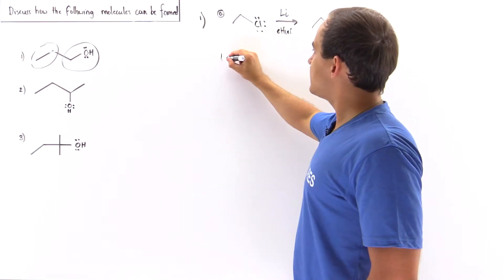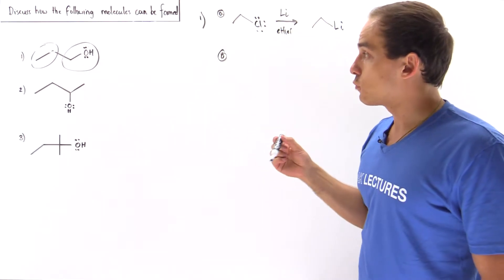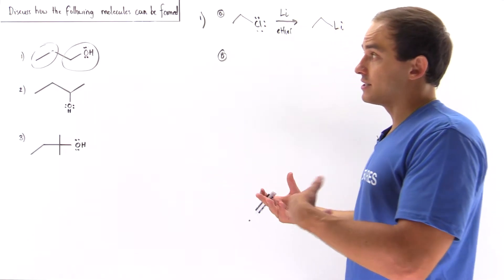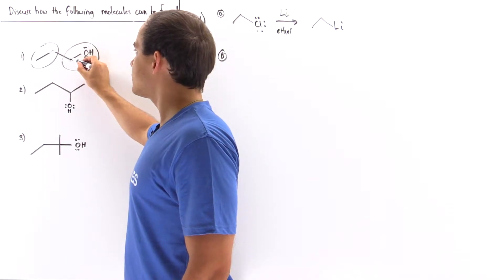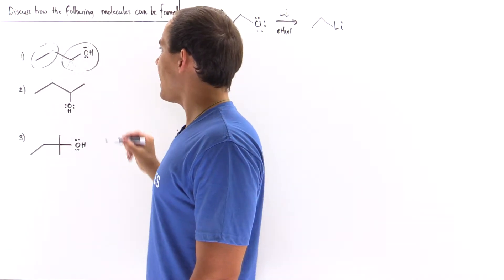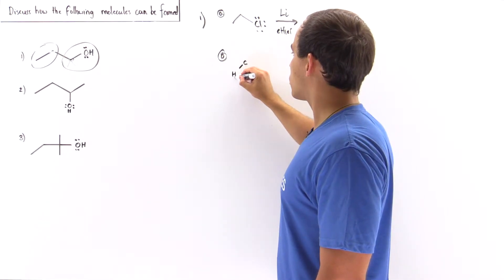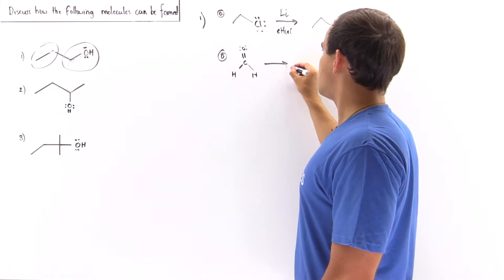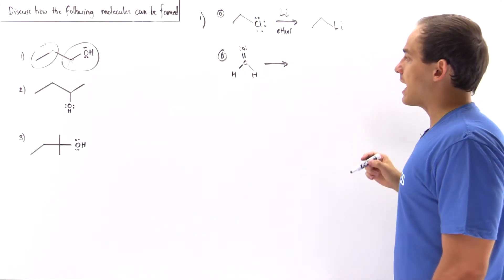In the second step we take our formaldehyde — not an aldehyde, but formaldehyde. The way we tell whether it's a formaldehyde, aldehyde, or ketone is by counting how many H atoms the carbonyl carbon is attached to. We have two H's, so this is formaldehyde. We then react this formaldehyde with our organolithium reagent in the presence of ether.